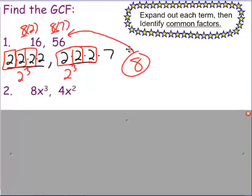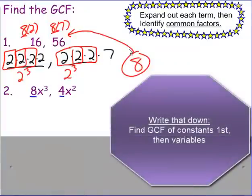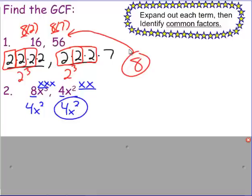Now let's look at variable terms — monomials where we're trying to find the greatest common factor. I'll look at constants first, then variables. For 8 and 4, the biggest thing they can both be divided by is 4, because 4 times 2 is 8 and 4 times 1 is 4. For variables: x cubed is x×x×x, and x squared is x×x. They each share two x's, so the greatest common factor of 8x³ and 4x² is 4x².